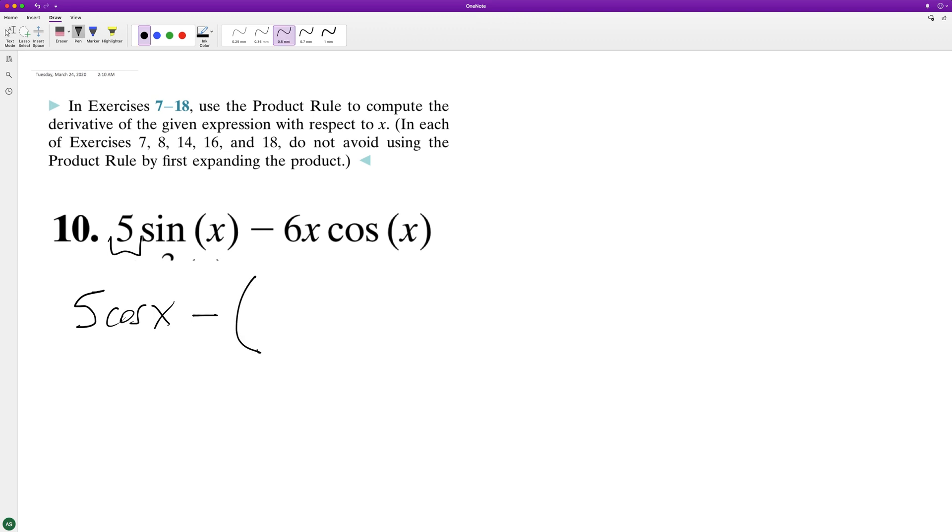And then we're going to take the quotient rule here. So we're going to get 6, derivative of 6x, so 6 times the cosine of x, minus 6x times the derivative of the cosine of x, which becomes negative sine of x.